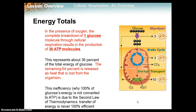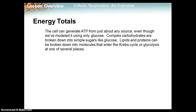This inefficiency is due to the second law of thermodynamics — the transfer of energy is never 100% efficient. Think of your car: the gasoline you put in doesn't convert all its energy to motion; some is lost as heat, which is why a car feels warm after running. The cell can generate ATP from almost any source, not just glucose. Complex carbohydrates break down into simple sugars like glucose; lipids and proteins can be broken down into molecules that enter the Krebs cycle or glycolysis.